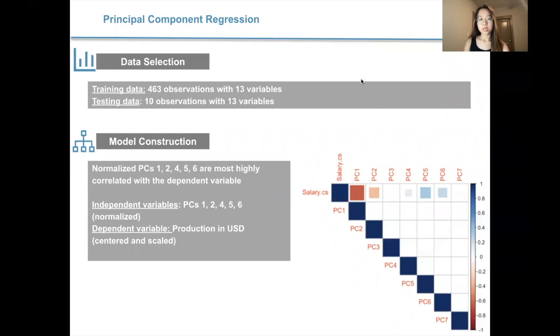So moving on to principal component regression, we have selected 10 observations with 13 variables to be our testing data that is sampled from the total data. And we have a training data set of 463 observations with 13 variables. And then we produce a correlation plot between the normalized PCs with the centered and scaled dependent variable. In this case, that is the production value in USD, and that is also centered and scaled. So at the end, we decided to choose PCs 1, 2, 4, 5, 6 among the 7 PCs that explain over 90% of the variability in the graph. We can see that 1, 2, 4, 5, 6 PCs are the most correlated with the dependent variable, whereas PC3 and 7 have a correlation lower than 0.1 with the dependent variable. So we chose to discard them.